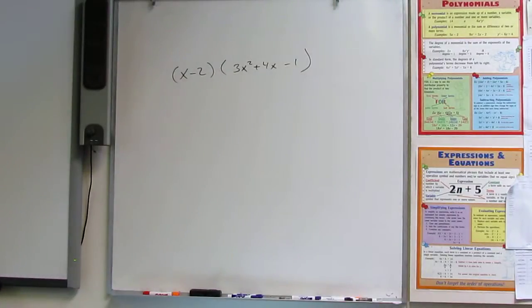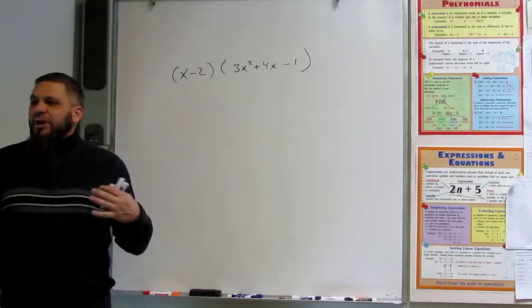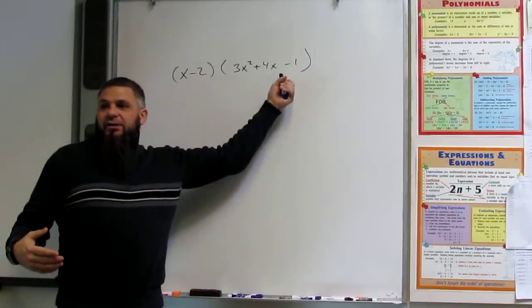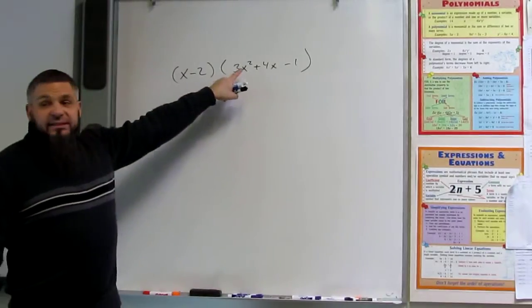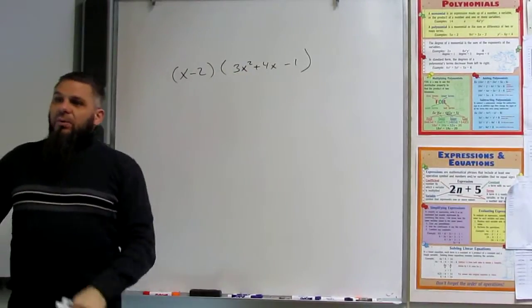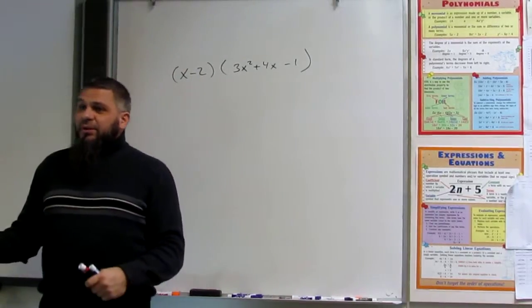And so what we're going to do is, again, like I said, we're multiplying two polynomials, a binomial and a trinomial. This is a first-degree binomial. This is a second-degree trinomial. And we're going to end up with something. We don't know yet what, but we're going to end up with something.